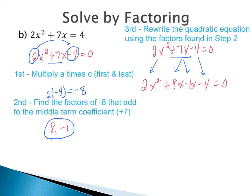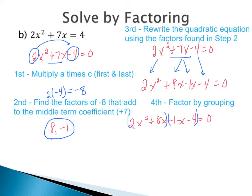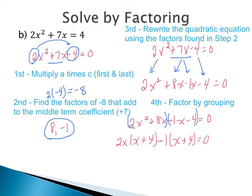Rewriting: 2x squared plus 8x minus 1x minus 4 equals zero. With factor by grouping, I group two terms at a time and factor out the GCF within each group. For 2x squared plus 8x, I take out a GCF of 2x, leaving x plus 4. For minus 1x minus 4, since the first term is negative, I take out a negative 1, and the terms inside change signs: negative 1x becomes x and negative 4 becomes plus 4. So both groups give us x plus 4 inside — we're in good shape.